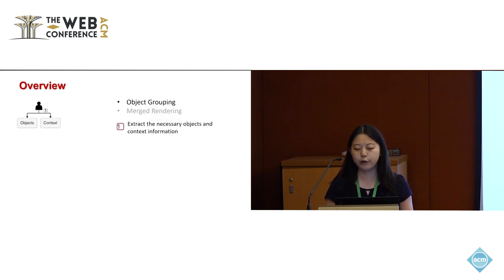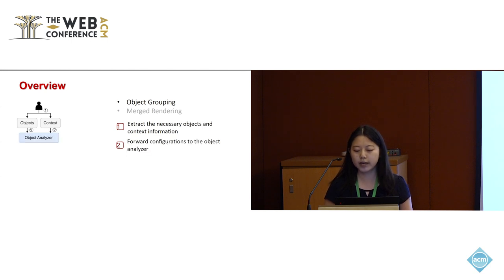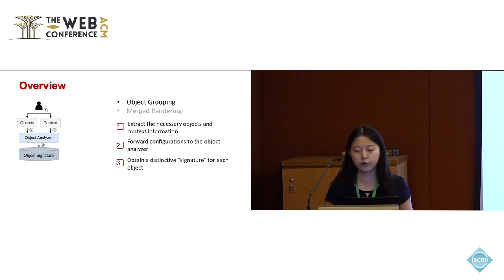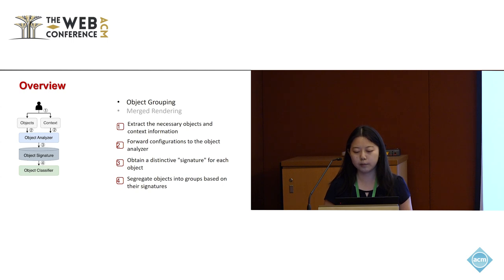In the beginning, Fusion Render ingests the necessary object and context information. During scene rendering, the renderer initially forwards these configurations to the object analyzer for examination. The object analyzer obtains a distinct signature for each object, encompassing all records data from configuring the rendering pipeline. The object classifier then segregates objects into groups based on their signatures, allowing objects in the same group to be joined using a shared rendering pipeline.